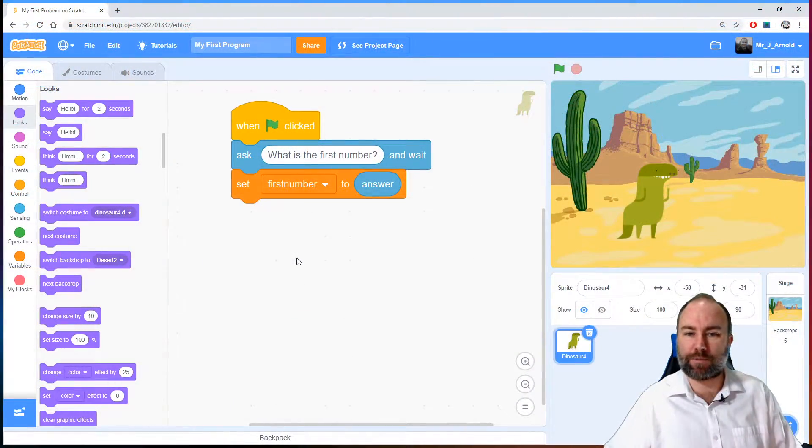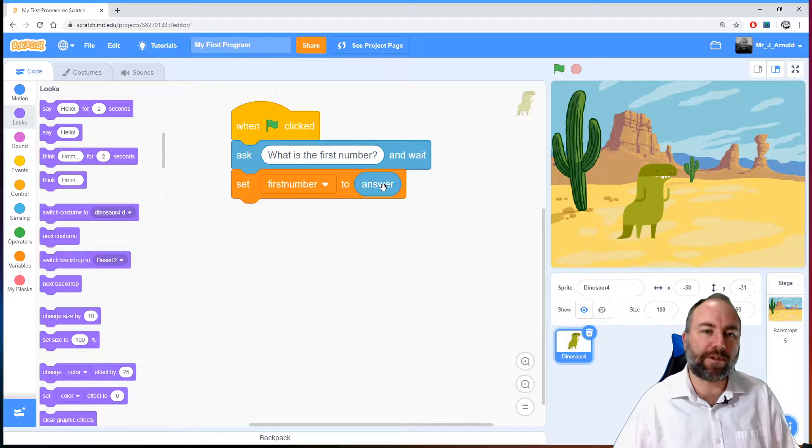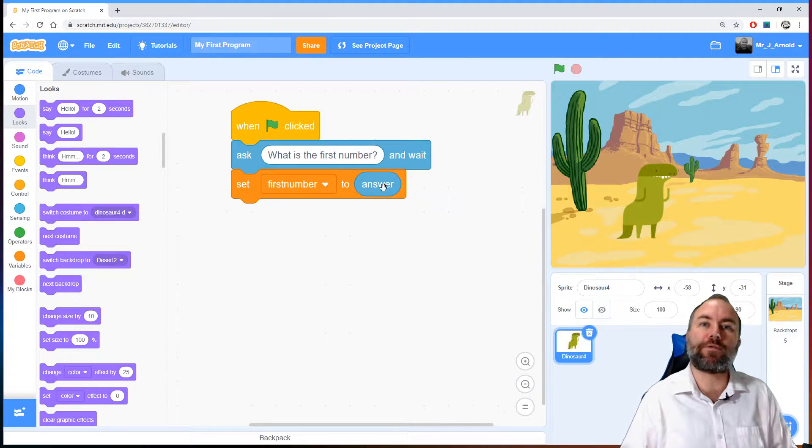So let's have a look at our program here. This is part of the program we used last time. I've deleted some of the code from the bottom, so we're just left with the what is the first number and then set that first number variable to whatever the user asks us. Now we're going to change this program slightly so that instead of asking for the first number we're going to ask for their age.